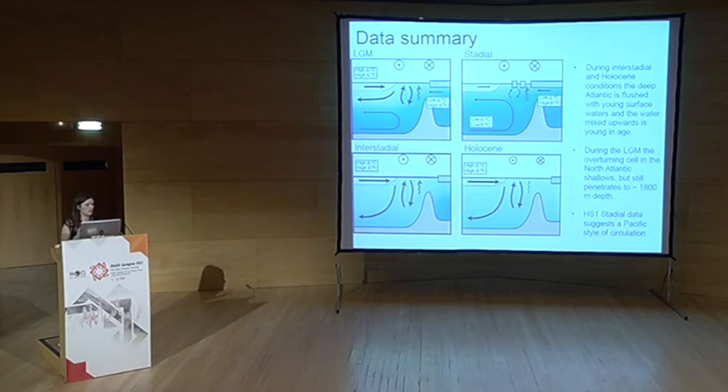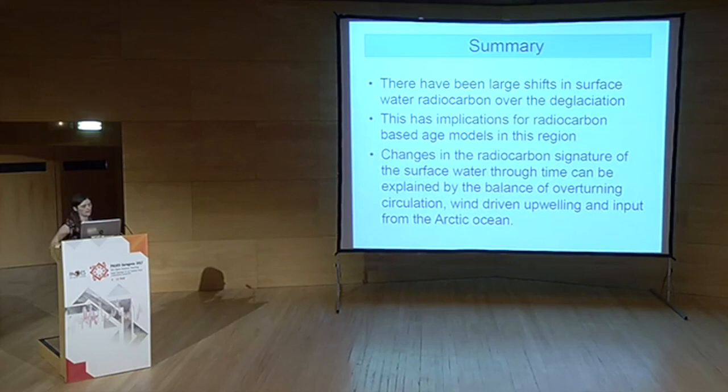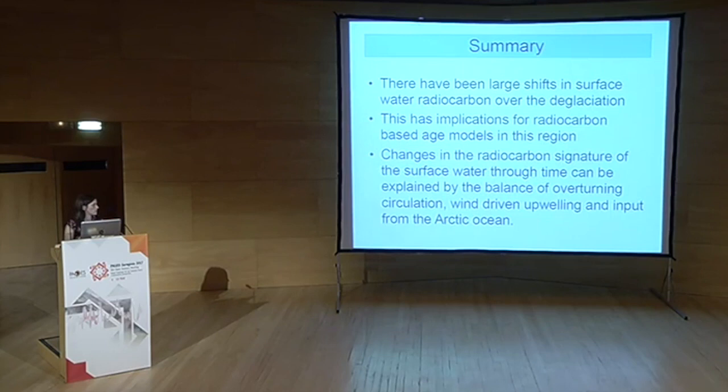Summary: large changes in surface reservoir ages over deglaciation with maximum ages of 2,000 years in HS1, with major implications for radiocarbon-based age models in this region. The changes can be explained by a balance of upwelling of old radiocarbon-depleted deep water, lateral transport of young well-equilibrated water from the tropical-subtropical regions, and a potential old radiocarbon source from the Arctic Ocean.